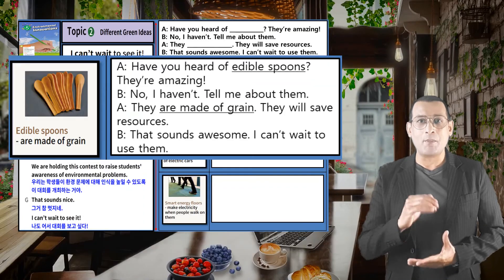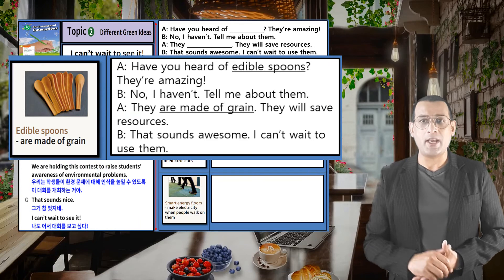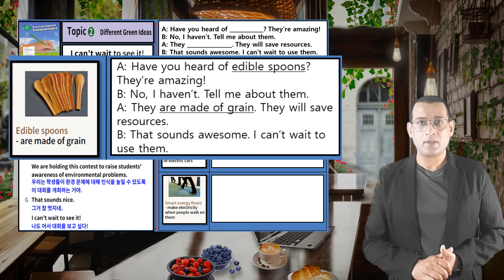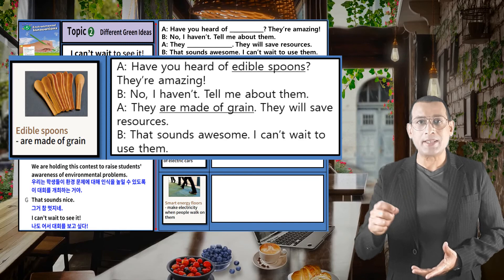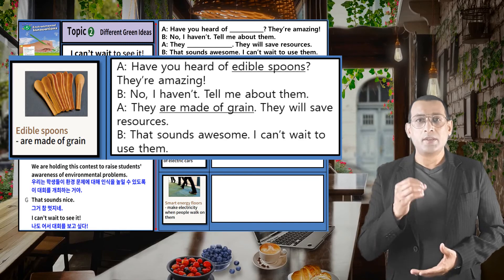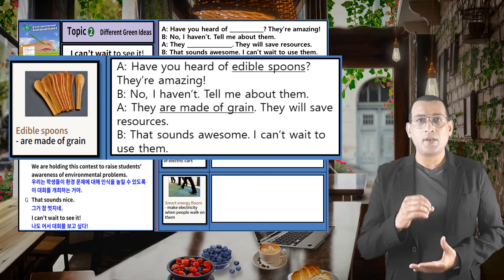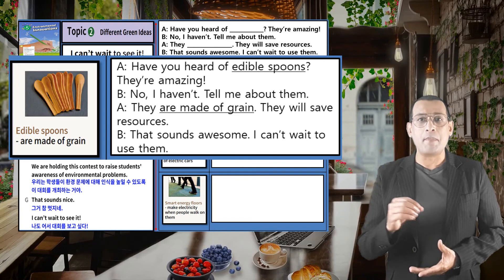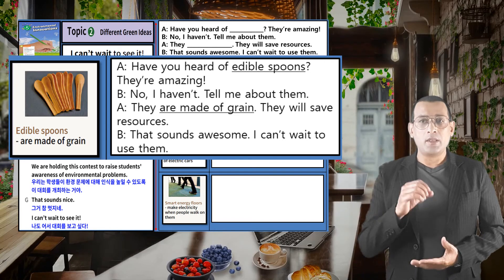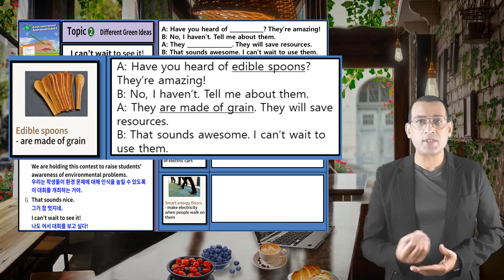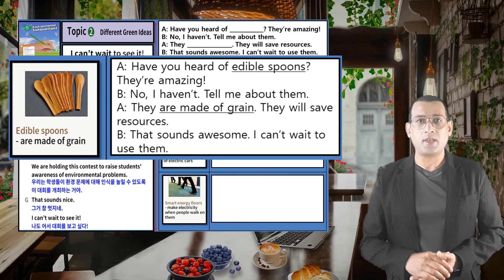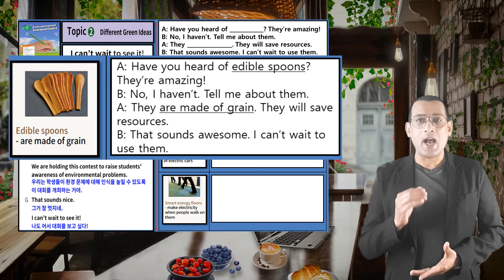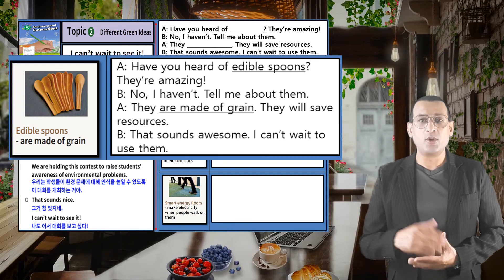Let's do it. Number one: edible spoons. Have you heard of edible spoons? Edible means that you can eat the spoons. They are amazing. No, I haven't. Tell me about them. They are made of grain. They will save resources. That sounds awesome. I can't wait to use them.